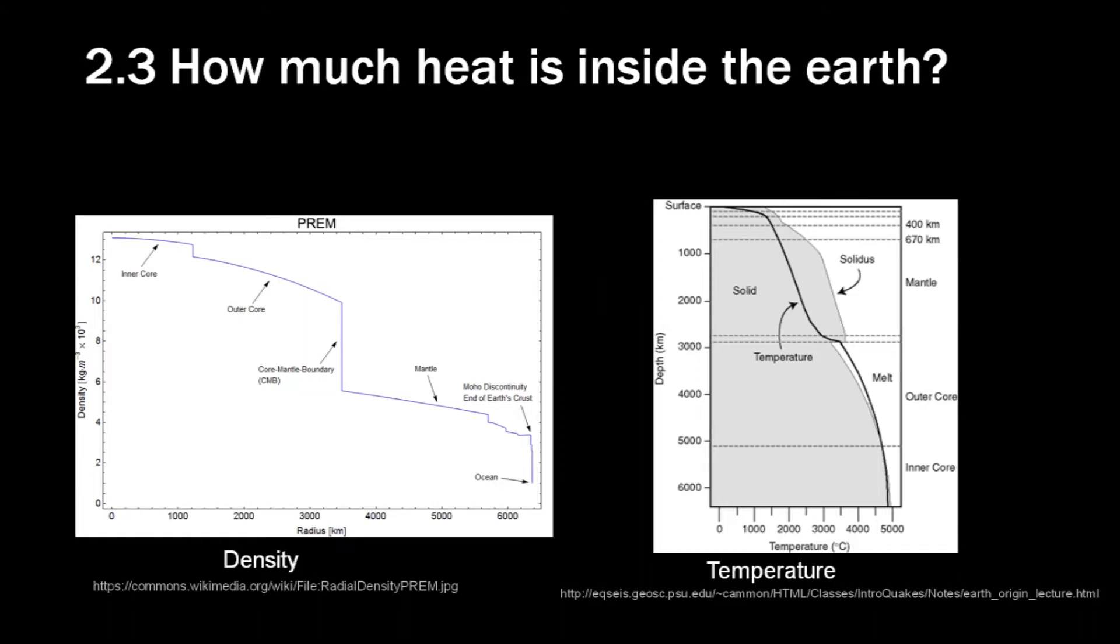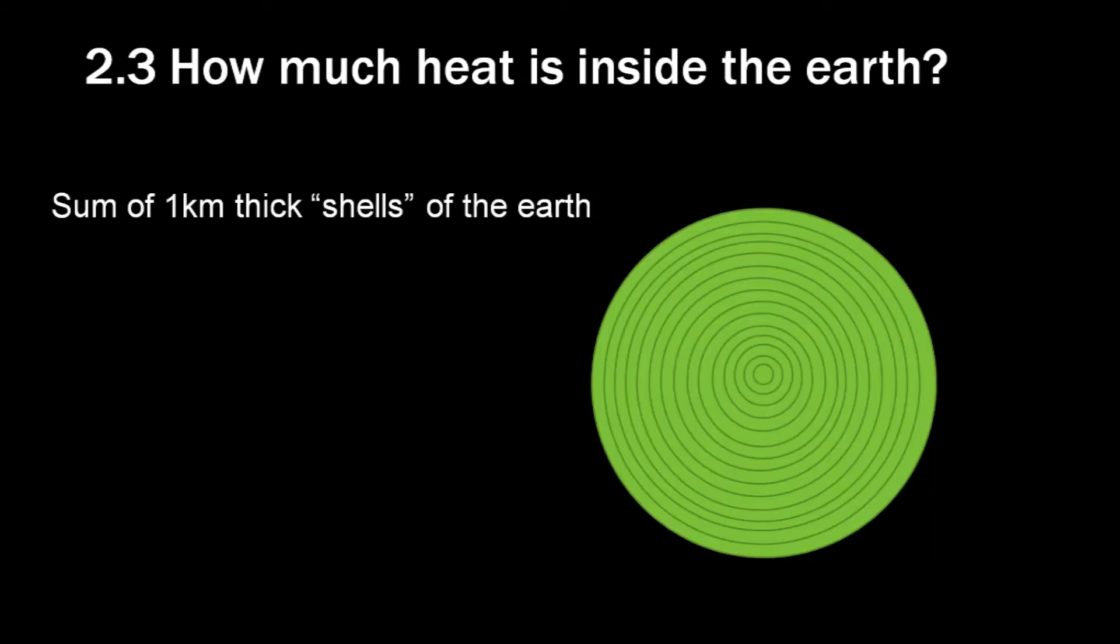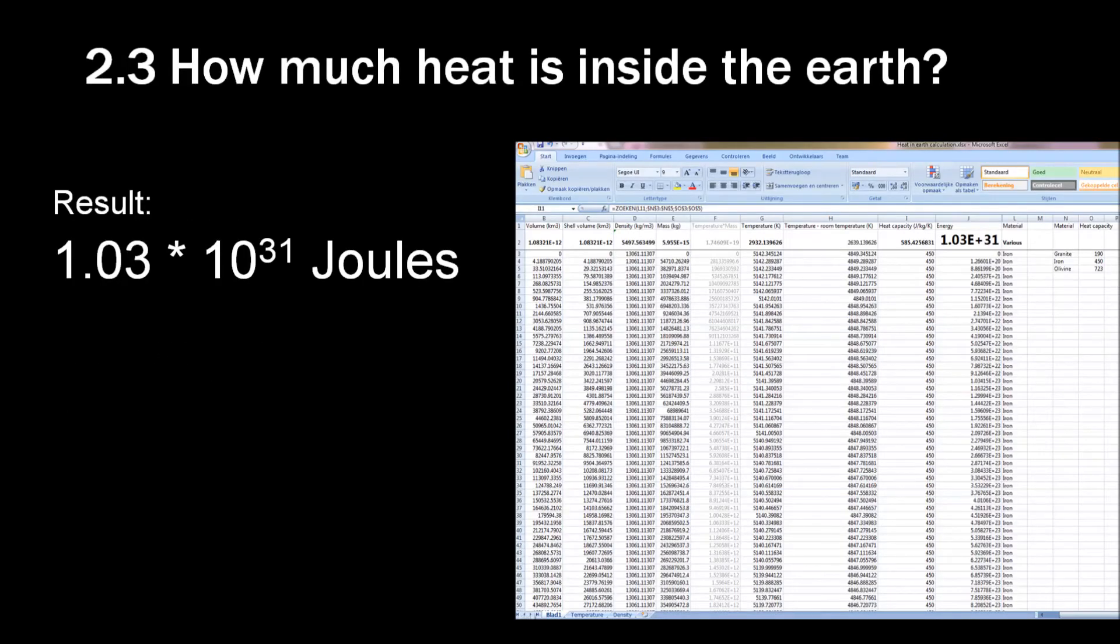Let's take some examples. Iron has a heat capacity of 450 joules per kilogram Kelvin. Water has almost 10 times as much. Granite has 190, and olivine 723. Why these materials? Well, iron is inside the Earth's core, water is at the surface, granite is in the crust, and olivine is the main component of the mantle. If we want to know the amount of heat energy, we must multiply heat capacity with temperature, density, and volume. The density of the interior of the Earth is fairly well known, thanks to seismic interpretation. The temperature holds some more uncertainties, but still there is little doubt that it would be significantly different. Since the density, material, and temperatures differs per depth of the Earth, I have divided the Earth into 1 km thick shells, calculated the heat energy per shell, and then I've added up the shells to get the answer.